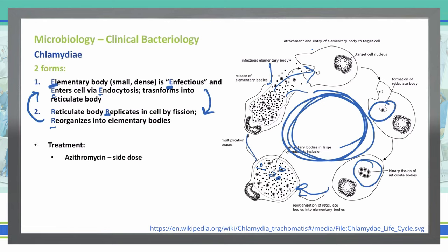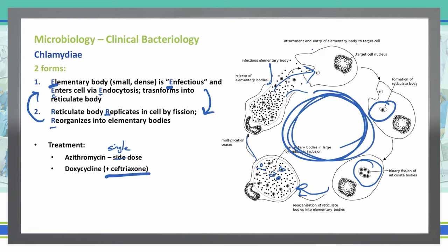How do we treat chlamydia? Azithromycin is the first-line treatment and it's just a single dose. We can also use doxycycline and ceftriaxone. The reason we add ceftriaxone with doxycycline is not because of resistance, but because chlamydia often presents alongside gonorrhea. So we give ceftriaxone and doxycycline to cover a concomitant chlamydia and gonorrhea infection.